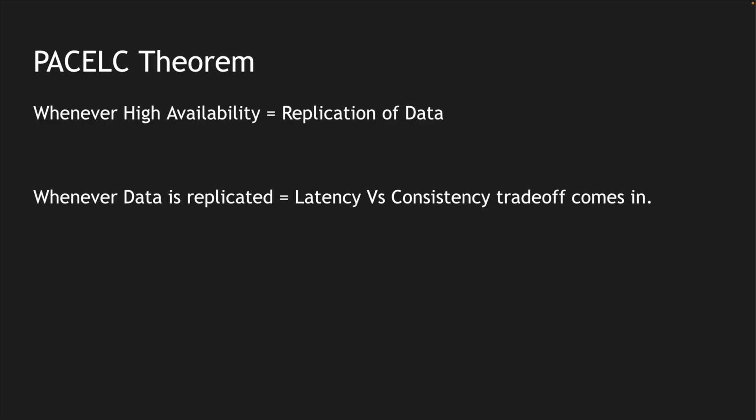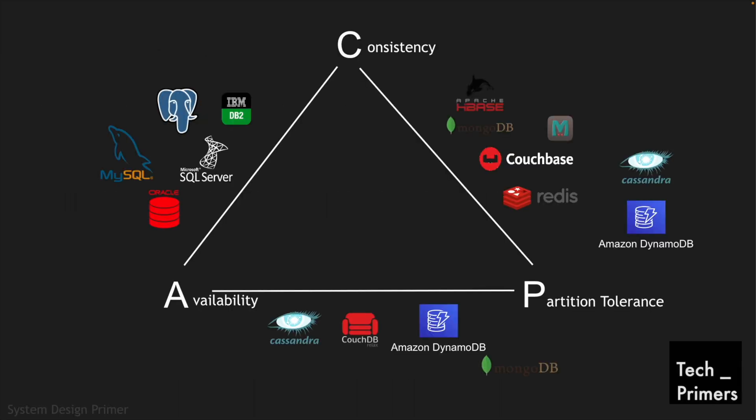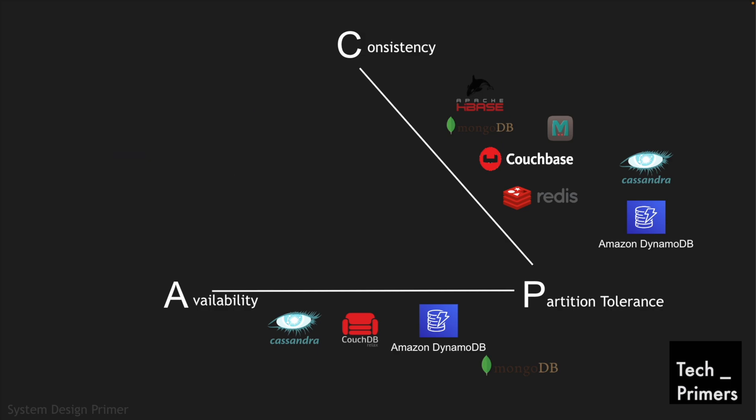If you're interested in reading about how PACELC evolved, take a look at the white paper — I'll leave the link in the description below. That is where the PACELC theorem started. In the new PACELC theorem, there is no direct correlation between consistency and availability because partition tolerance takes preference in a distributed system, so we remove the CAP triangle as it no longer applies.